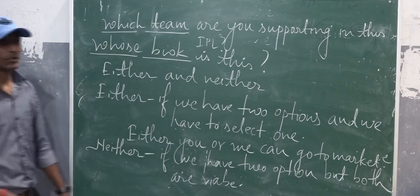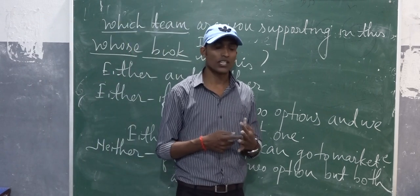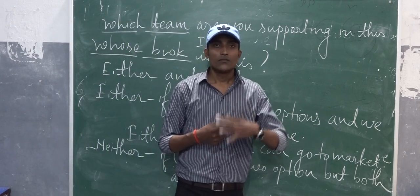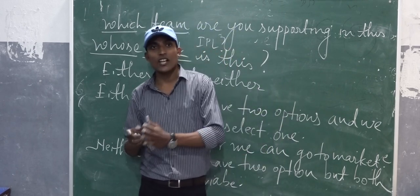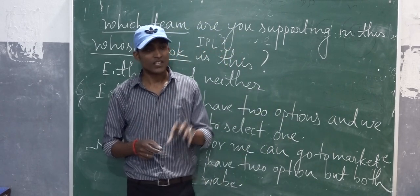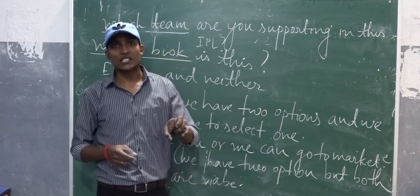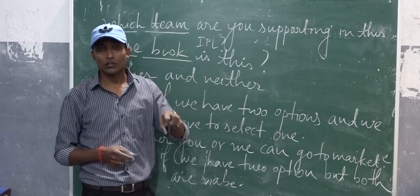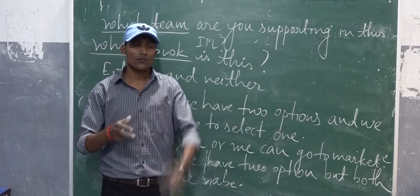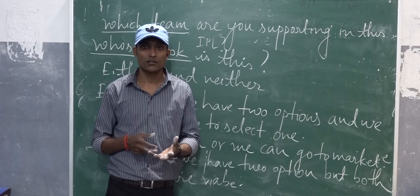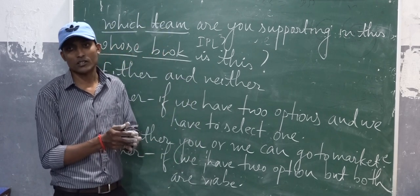Next is demonstrative determiners. We all know these: this, that, these, and those — these four words. We use them to demonstrate any particular thing or any particular group. For example: this boy, that girl, those boys, these girls.